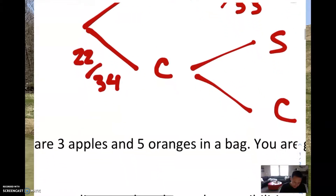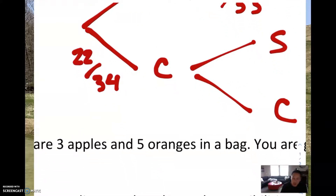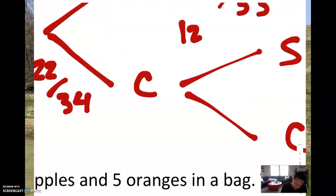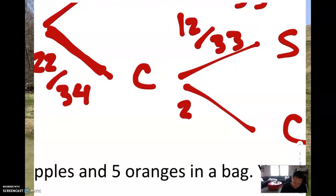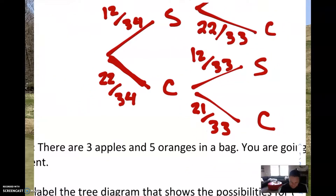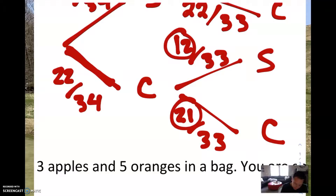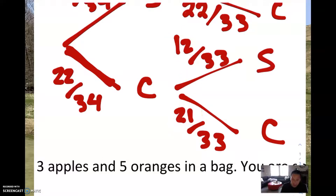Now let's go into the second hypothetical world — the world where I selected a Coke first. If I selected a Coke first, I should still have all my Sprites remaining. So I still have 12 out of 33 Sprites remaining. I took a Coke, not a Sprite, so there are still 33 sodas remaining with all 12 Sprites. Now if I selected a Coke first, there are 21 Cokes remaining, giving a 21 out of 33 chance. To check: 12 plus 21 equals 33. Correct.